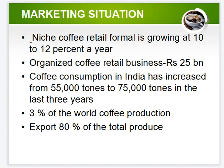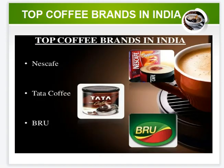Coffee retail in India: the informal sector is growing at 10 to 12 percent per year. The organized coffee retail business has around 25 chains. Coffee consumption in India has increased from 55 tonnes to 75 tonnes in the last three years. Three percent of the total value of coffee production is exported, while 80 percent of the total produce is also exported.